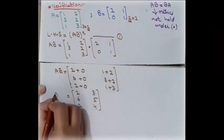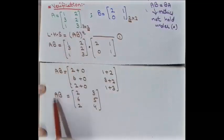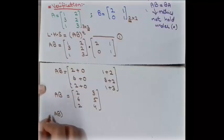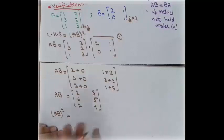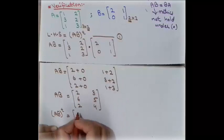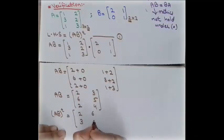We have computed AB, but we need the transpose of AB for the left-hand side. Taking the transpose means swapping rows into columns. After transposition, the matrix (AB)ᵀ becomes [[2,6,2],[3,5,4]]. This is our left-hand side result.